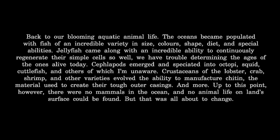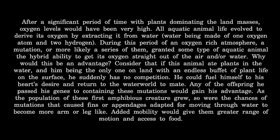After a significant period of time with plants dominating the land masses, oxygen levels would have been very high. All aquatic animal life evolved to derive its oxygen by extracting it from water. During this period of an oxygen-rich atmosphere, a mutation — or more likely a series of them — granted some type of aquatic animal the hybrid ability to get its oxygen straight out of the air and/or water. Consider that if this animal ate plants in the water, but was the only one on land with an endless buffet of plant life on the surface, he suddenly has no competition. Any offspring he passed his genes to containing these mutations would gain his advantage. As the population of these first amphibious creatures grew, so were the chances of mutations that caused fins or appendages to become more arm or leg-like.